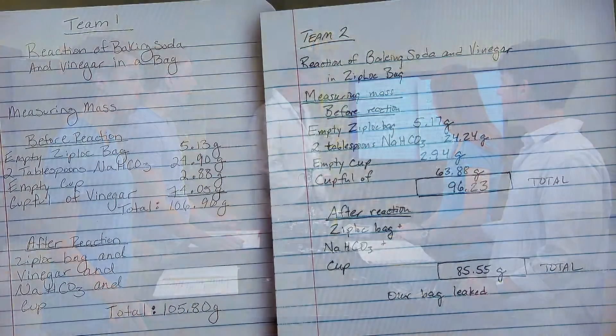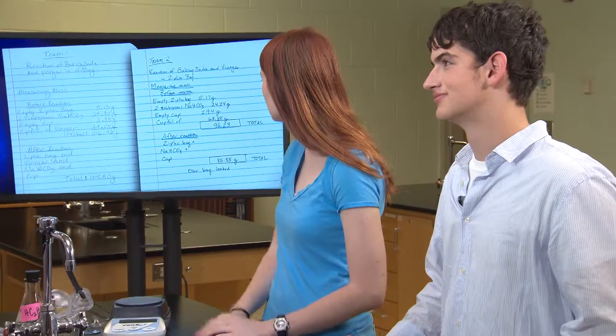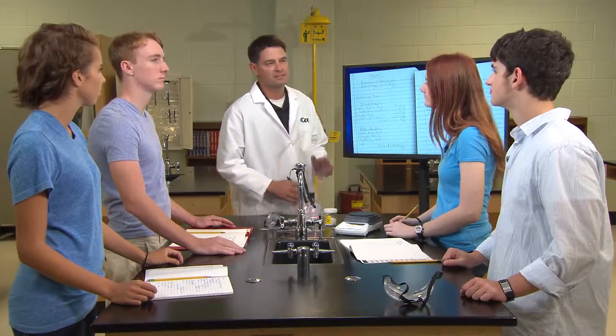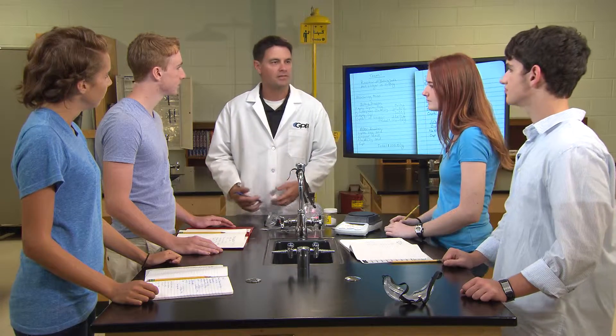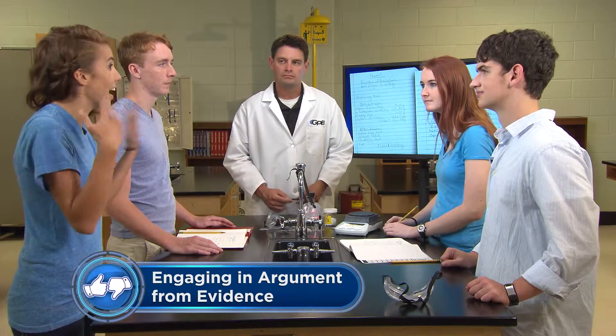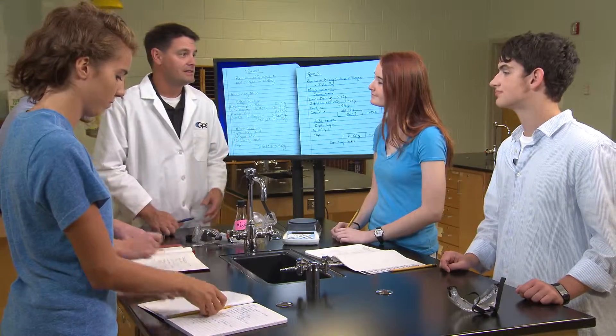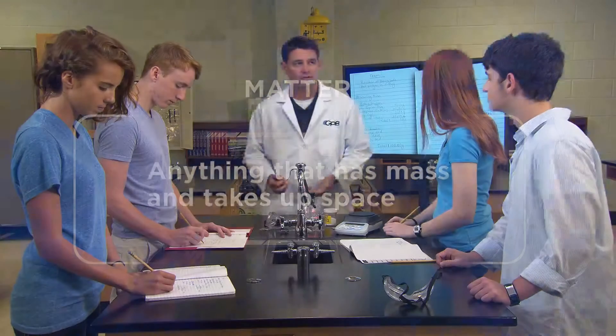Looking at the data — our numbers are almost the same before and after. But the bag puffed up, so the product should have been bigger. Our bag didn't puff up and our product mass is smaller. Maybe our bag leaked. If the bag leaked and didn't puff up, the product had less mass. What makes the bag puff up? It's the gas. But do gases have mass? Gases must have mass — the bag that puffed up had more mass, and you're right: gases do have mass.